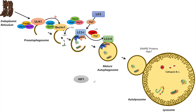The next transcriptional activator is HIF-1, or hypoxia-induced factor 1. As its name suggests, HIF-1 is activated by hypoxia — but in contrast to ATF4, which is activated by severe hypoxia, HIF-1 is activated by mild hypoxia. When HIF-1 is activated, it enters the nucleus and induces the expression of BNIP3. BNIP3 actually activates Beclin-1 by inhibiting the BCL-2 inhibition on Beclin-1, leading to Beclin-1 activation.